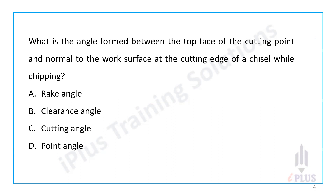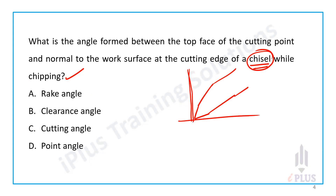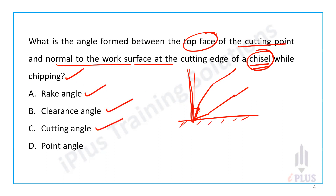Next question: what is the angle formed between the top face of the cutting point and the normal to the work surface at the cutting edge of a chisel while chipping? Options are: option A, rake angle; option B, clearance angle; option C, cutting angle; option D, point angle.